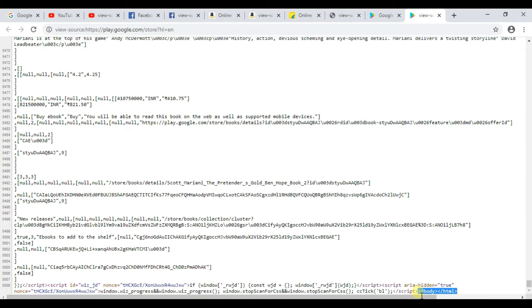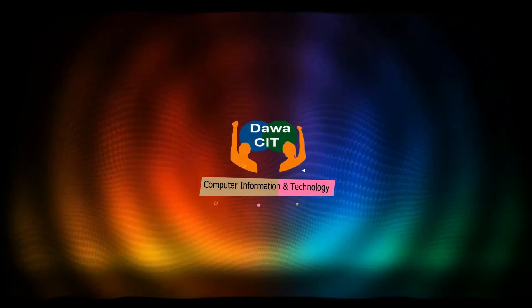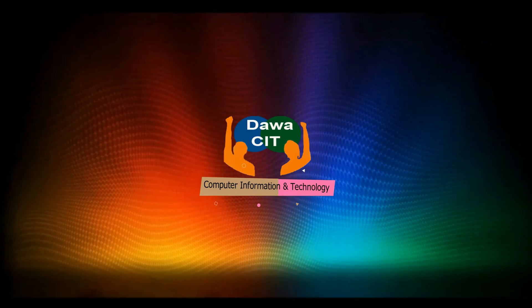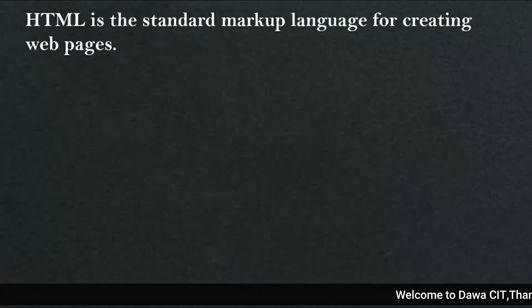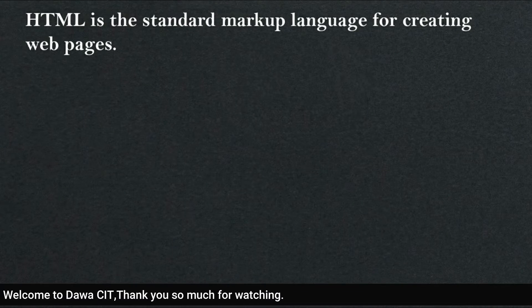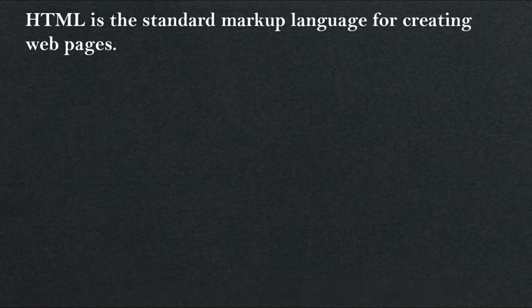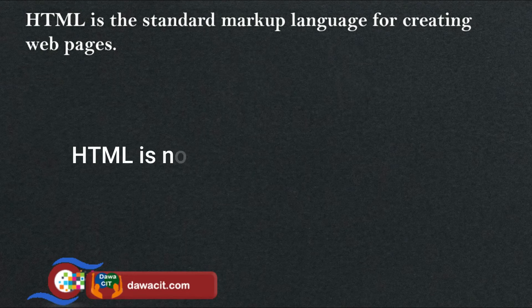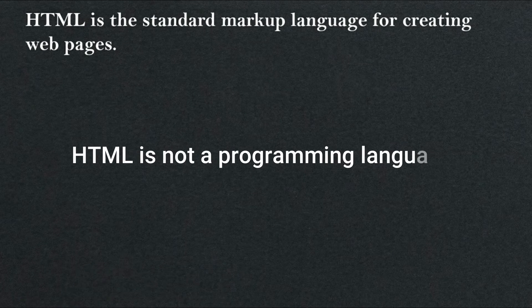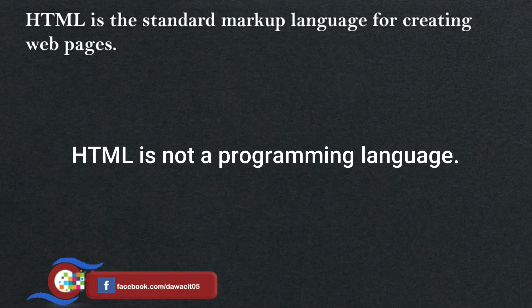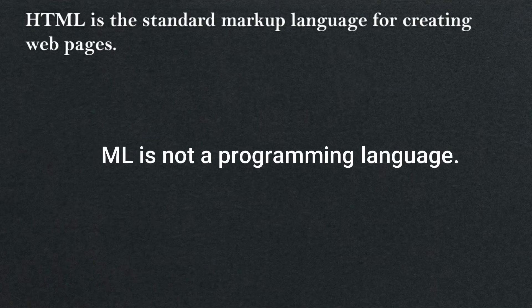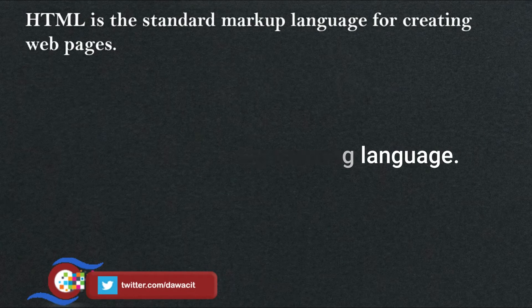So that's why HTML is a very necessary language in order to create websites and web applications. HTML is the standard markup language for creating web pages. Remember that HTML is not a programming language because it doesn't have the ability to create dynamic functionality. Some people think that HTML is a programming language, but it is not true — it is a markup language.